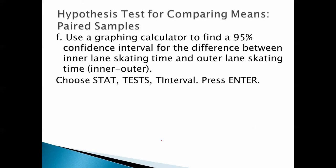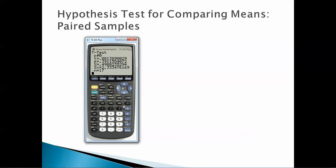That is inner minus outer. So choose stat, test, t-interval, and press enter. So again, stat, tests, t-interval, enter. Input is data. Yeah, the input is data. List is L3. Confidence level, 0.95. That's what we want. Calculate.